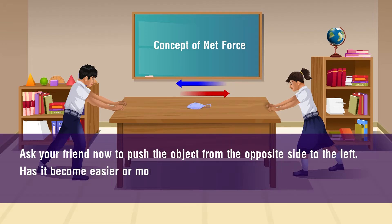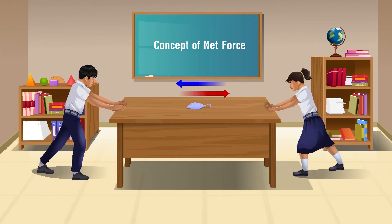It becomes difficult to move the object when both of you apply forces in opposite directions. In fact, it is possible to prevent the object from moving at all by applying equal forces in opposite directions.